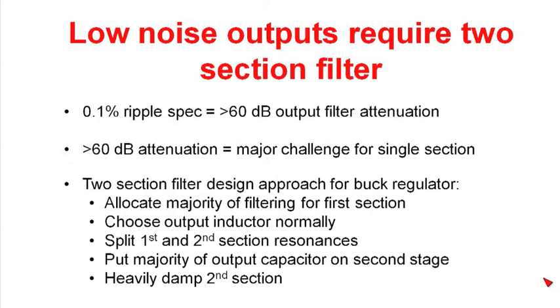Now, 60 dB of attenuation in a filter is a rather major challenge for a single-section design. You're going to be limited by parasitics and the components and coupling. That'll make it almost impossible to get more than 60 dB from a single section. So you're stuck with two sections.